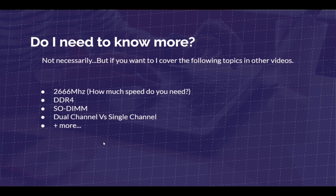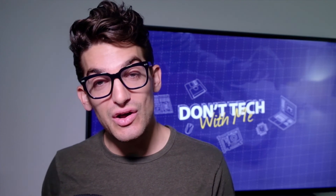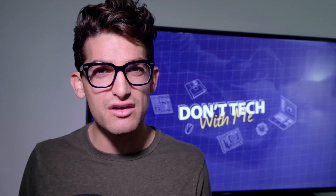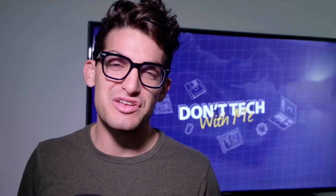Future videos will cover RAM speed in depth — whether 2666 MHz, 3000 MHz, or 1600 MHz is right for you — as well as DDR4 updates, SODIMM details, and dual channel versus single channel. Thanks so much for tuning in. If this brought you value, hit the like button, subscribe, and ring the bell. I'm Benji Kaiser — you've been watching Don't Tech With Me, and I'll see you in the next episode.